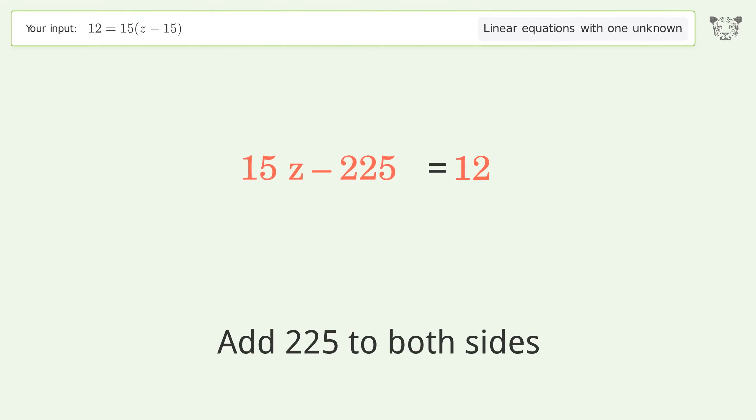Isolate z: divide both sides by 15. Simplify the fraction.